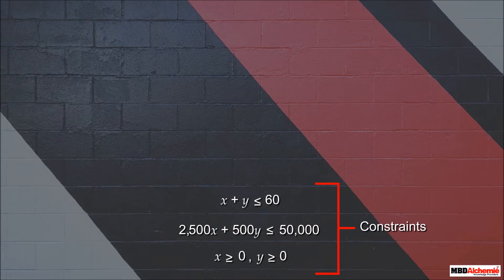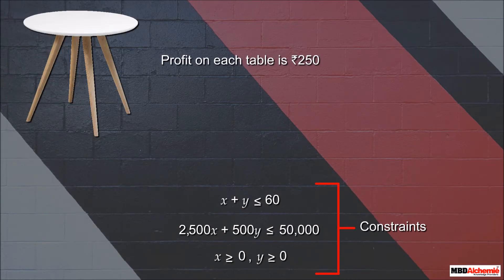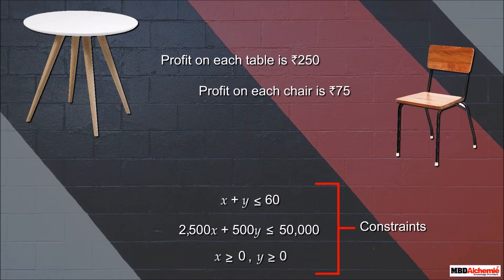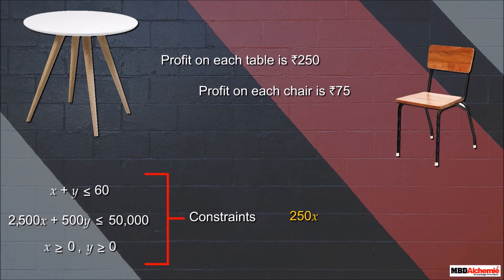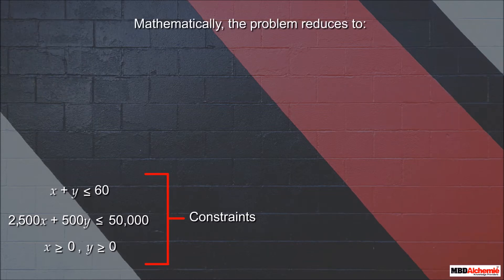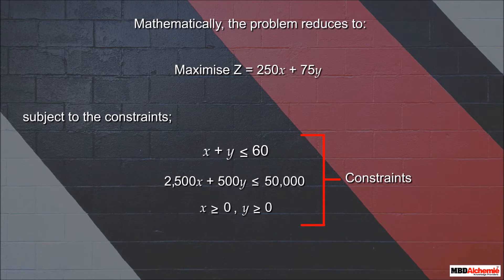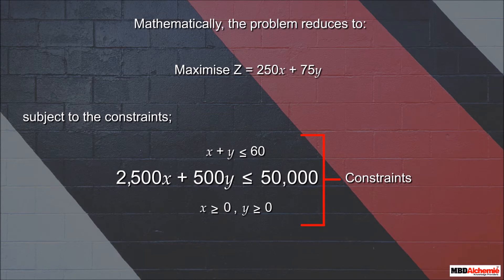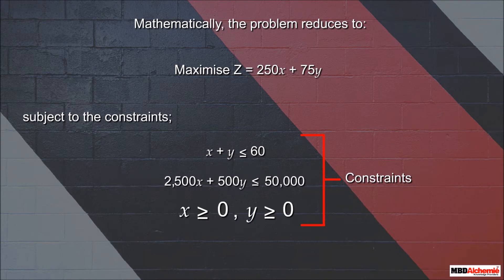The businessman earns a profit of 250 rupees on selling a table and 75 rupees on selling a chair. So 250x + 75y is called the objective function, represented by Z. Mathematically, the problem reduces to: maximize Z = 250x + 75y, subject to the constraints: x + y ≤ 60, 2,500x + 500y ≤ 50,000, x ≥ 0, and y ≥ 0.